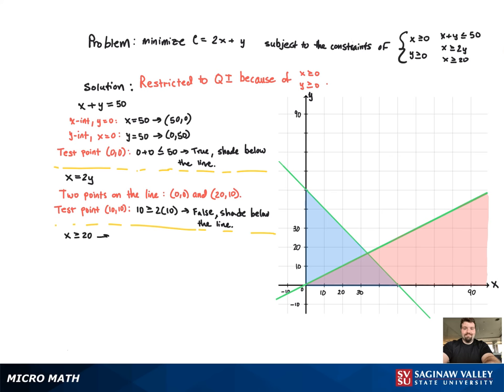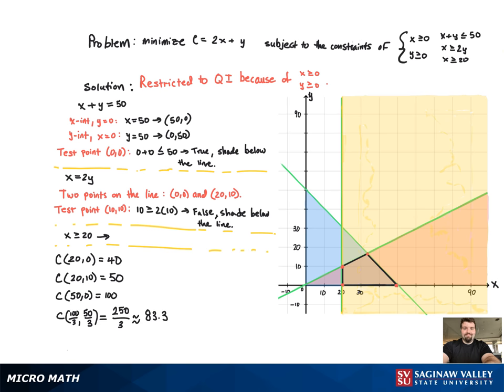And x greater than or equal to 20, that's just a vertical line. So we can go ahead and shade that in. Now we can see our feasible region.